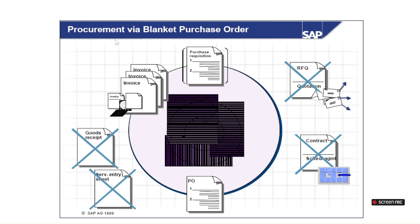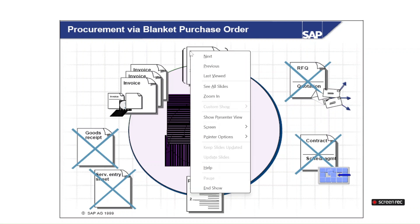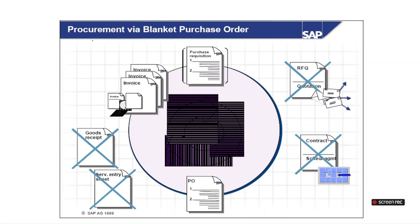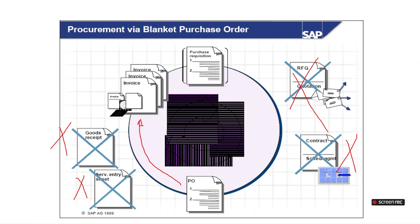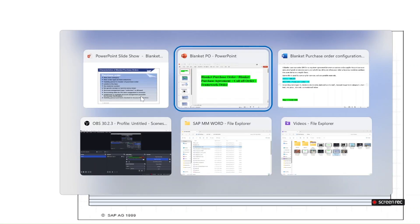If we do procurement through a blanket purchase order, the cycle is: we can optionally create a purchase requisition — it's not a mandatory document — and then directly create a blanket PO, and then directly do the invoice. We don't do a goods receipt, we don't create a service entry sheet, we don't create any RFQ or quotation, and we don't create any contract or scheduling agreement. So many documents are reduced.